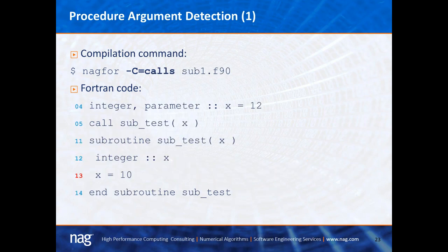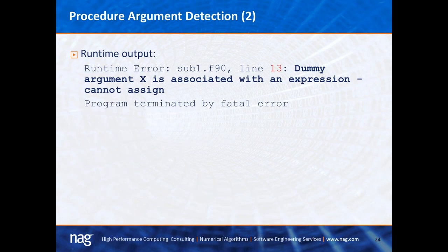The next check is for procedure argument detection, invoked with the -C=calls flag. In the example, line 4 declares a constant and passes it to subroutine 'subtest' on line 5. The subroutine at line 11 takes dummy argument integer X, which is intent inout by default. However, on line 13, the value 10 is assigned to it, which is invalid because the actual argument is a parameter. Executing this code reports: 'line 13, dummy argument X is associated with an expression — cannot assign.'